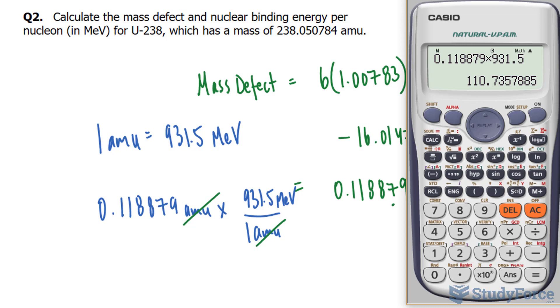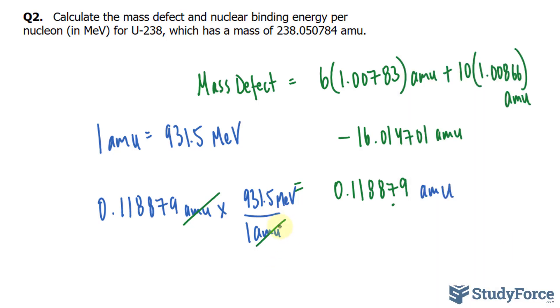And divide this by 16. You can round this number to four significant figures. So 6.921 MeV per nucleon.